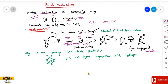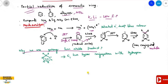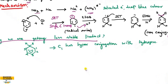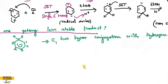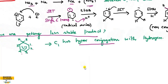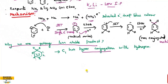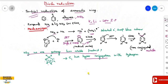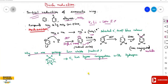Why do we get a less stable, non-conjugated product? It is stabilized by hyperconjugation with hydrogen. The carbon atoms one through five and their hydrogens participate in hyperconjugation. The first carbon and its hydrogen undergo hyperconjugation, making it a stable product overall. So these are the basics of Birch reduction.